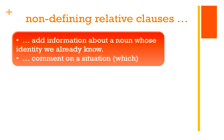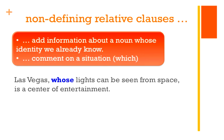Non-defining relative clauses add information about a noun whose identity we already know. Here's a sentence: 'Las Vegas, whose lights can be seen from space, is a center of entertainment.' So 'whose lights can be seen from space' is your non-defining relative clause. It gives you information about a noun whose identity you already know — Las Vegas. It's a city that we know. Non-defining relative clause.